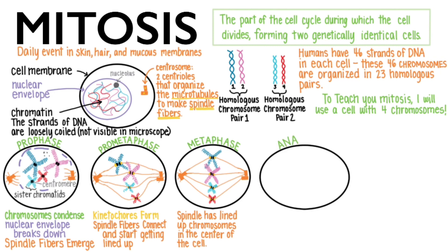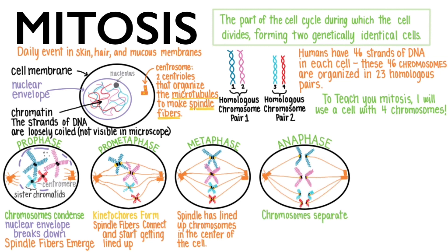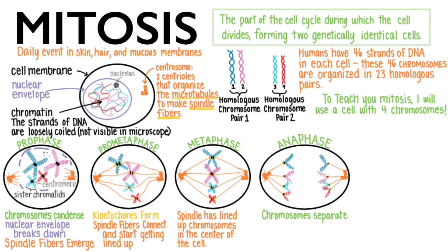During anaphase, the sister chromatids officially separate. Ana means to separate. And as they are pulled through the thick fluid of the cytoplasm, their arms drag behind them.